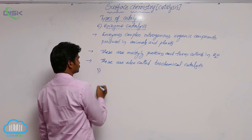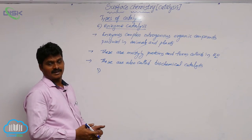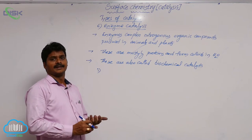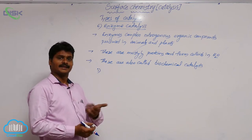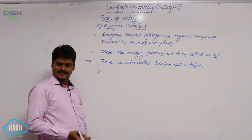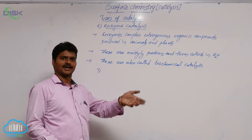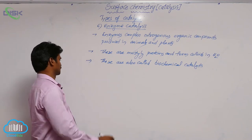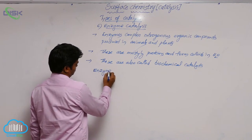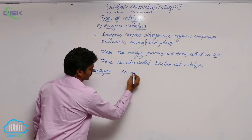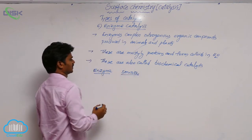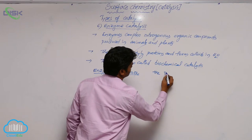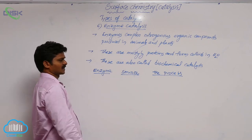Let's see some examples where enzymes act as catalysts — a table showing each enzyme, its source, and the biological reaction it catalyzes. The first enzyme is invertase. Its source is yeast, a fungus present in buttermilk.